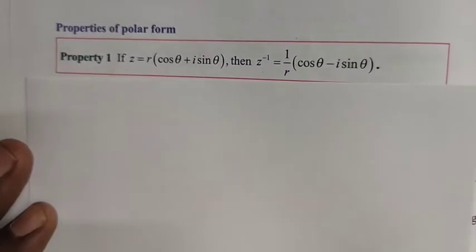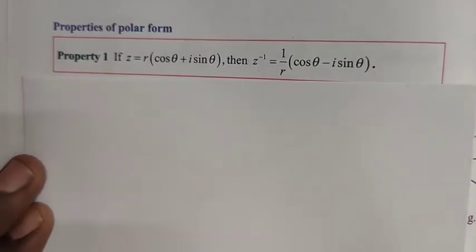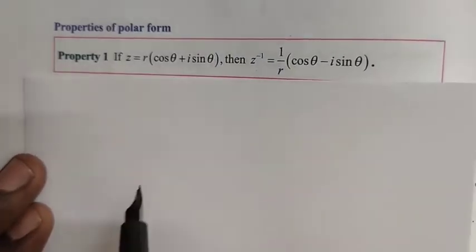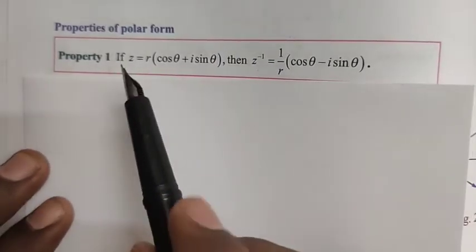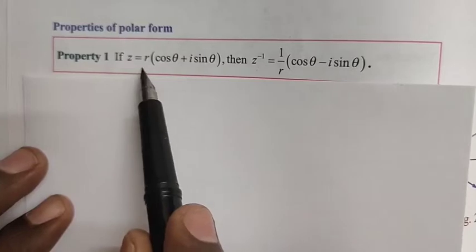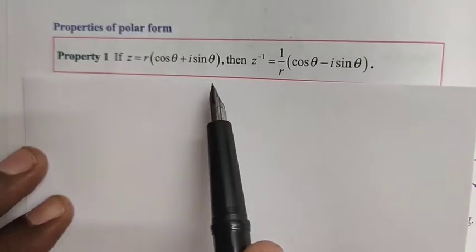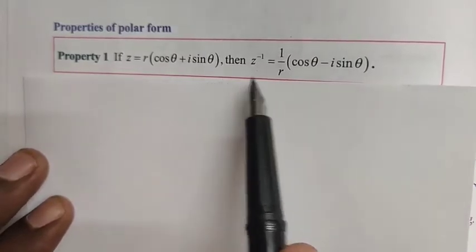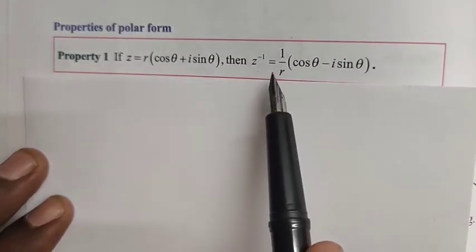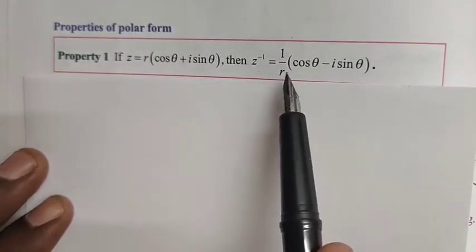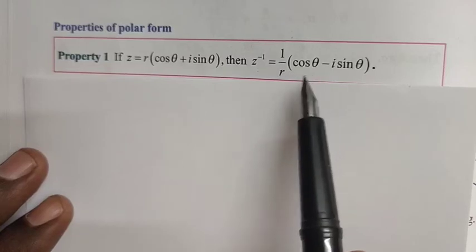Hi students. If you want to see the properties of polar form, let's look at them. Property one: if z is equal to r into cos θ plus i sin θ, then z inverse is equal to 1 by r into cos θ minus i sin θ.